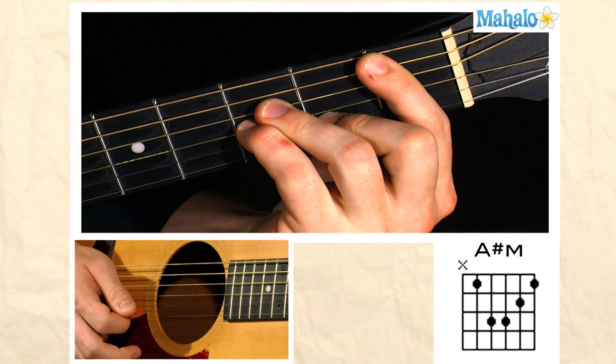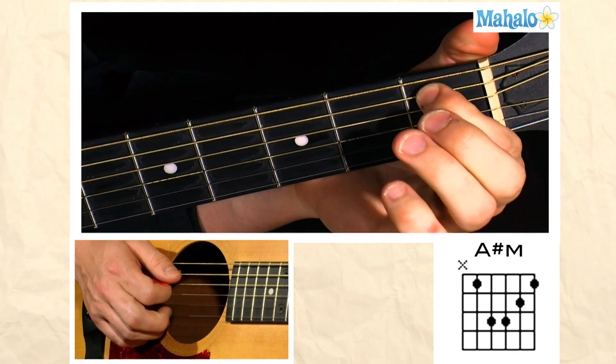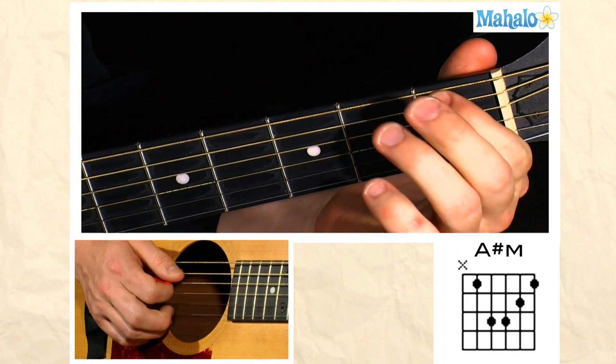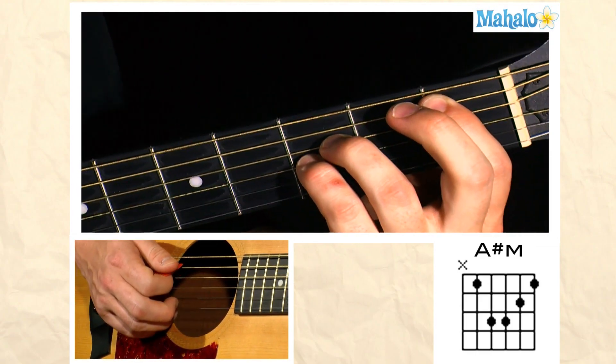Here you go. This is basic bar chord form. We're going to start here on the first fret of the A string to set our A-sharp, and then we're going to basically make a power chord right here.